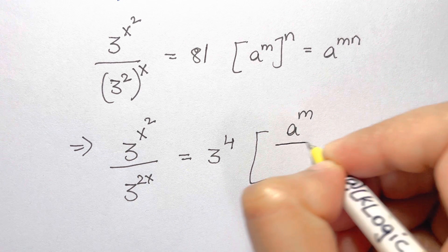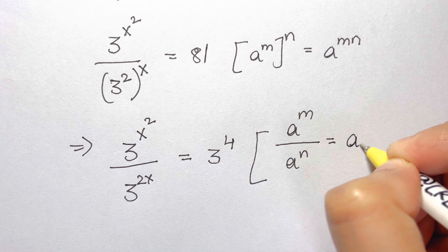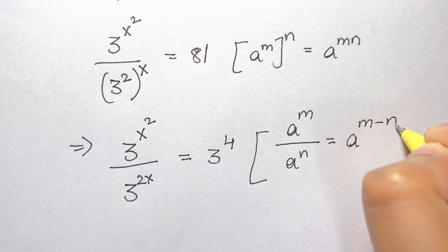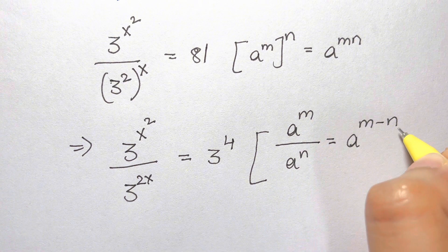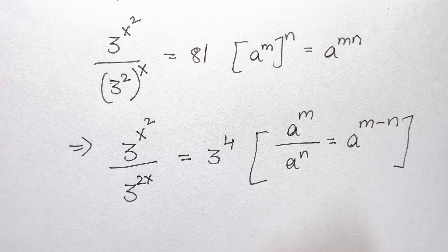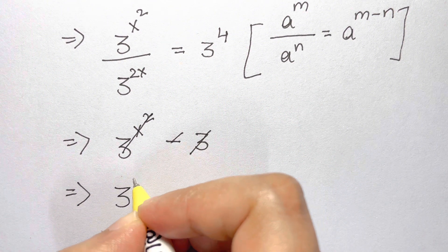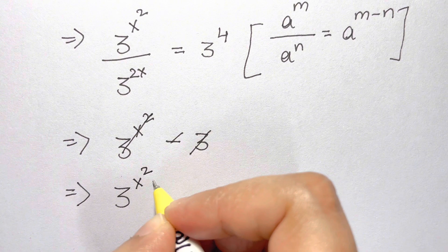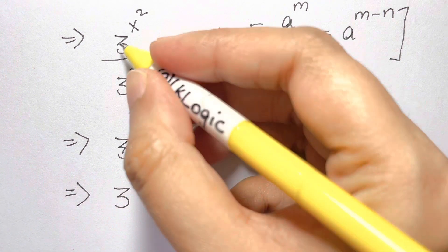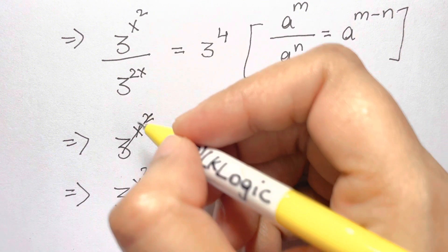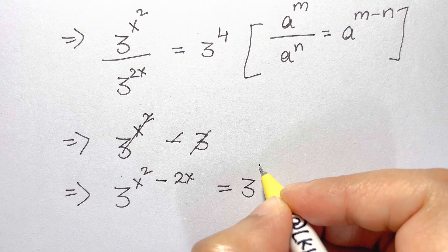Now you should know this: a to the power of m over a to the power of n equals a to the power of m minus n. Whenever you have the same base with division, you subtract the powers. So we apply this here: 3 to the power of x² minus 2x equals 3 to the power of 4.